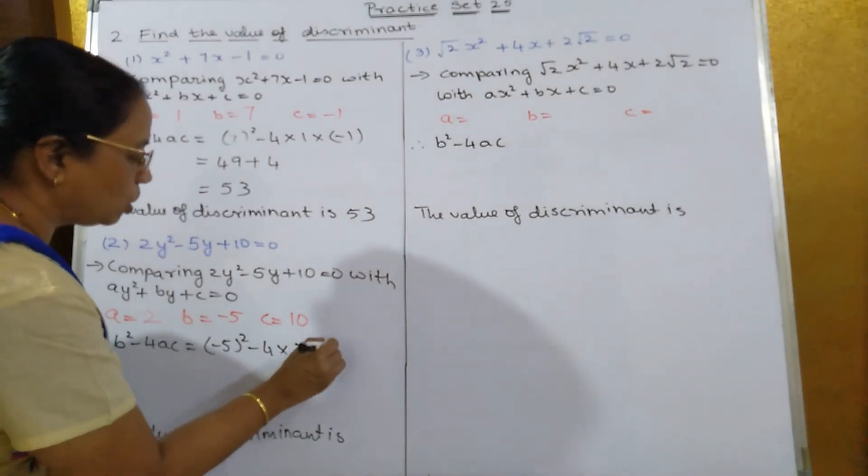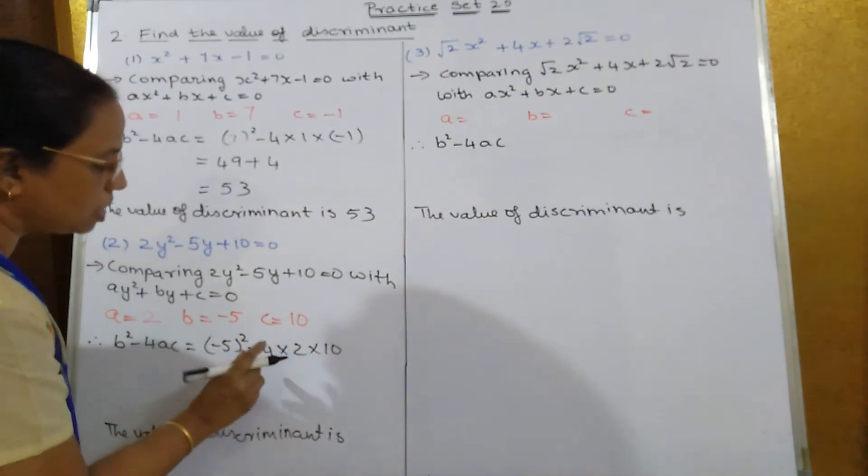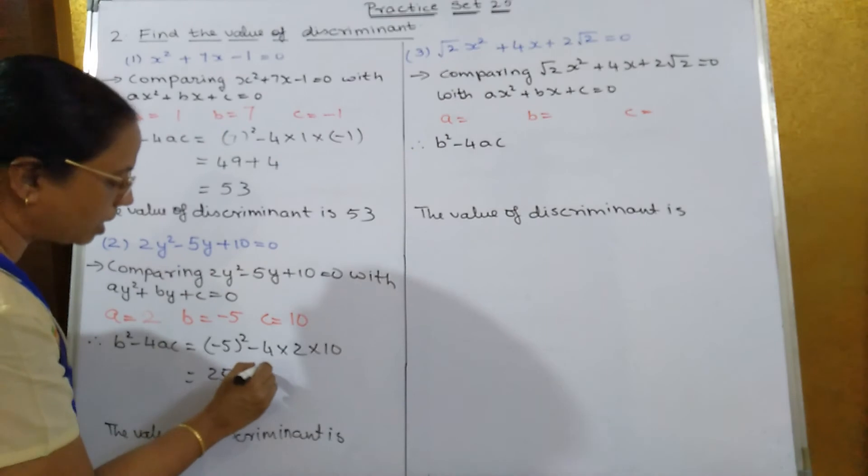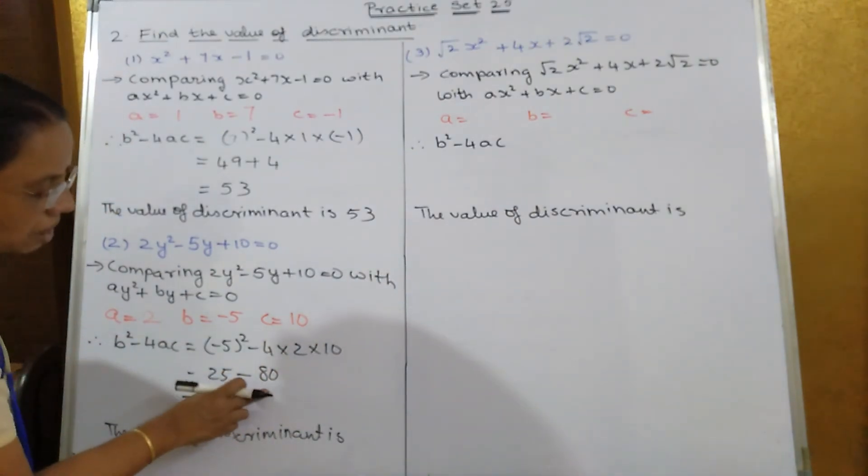So that's equal to minus 5 into minus 5 is 25, minus 4. 2s are 8. 8 into 10 is how much? 80. When you subtract this, you will get: since the bigger number is minus, so the answer will be in minus.